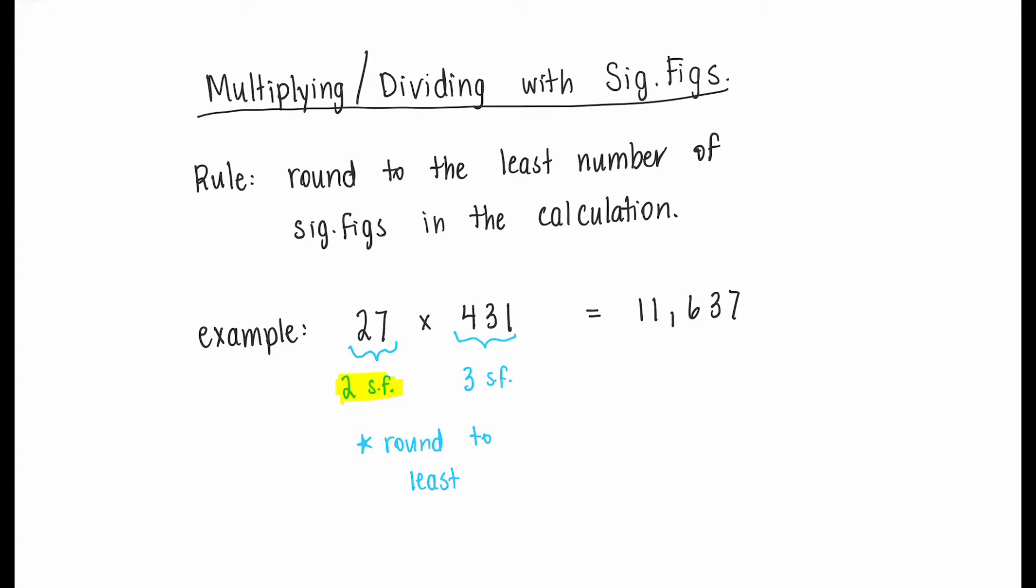So let's go to our answer, 11,637, and round to two significant figures. That six in the hundreds place is going to round the one up to two. And so our final answer will be 12,000.